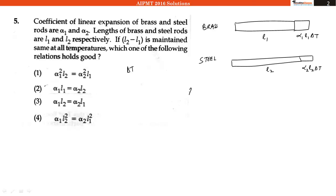What is given to us is that L2 minus L1 remains constant. It remains constant, it means that the new length which is equal to L2 plus alpha 2 L2 delta T minus L1 plus alpha 1 L1 delta T.